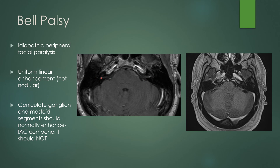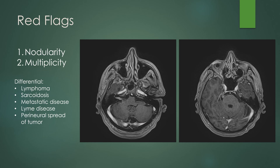Here is the normal side with no enhancement, and here is the linear enhancement of the distal IAC going towards the geniculate ganglion — that is what you see for Bell's palsy. Here is another case on the opposite side: linear enhancement in the IAC extending to the geniculate ganglion, that nice triangle shape — also imaging findings positive for Bell's palsy.